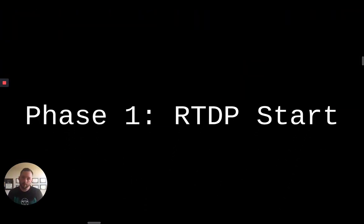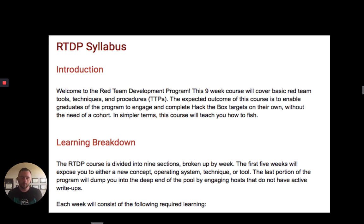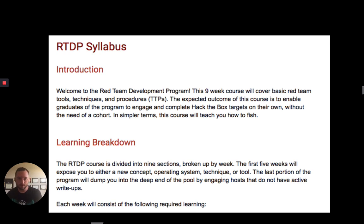Phase one: the Red Team Dev Program started. I had selected five people for our cohort, got buy-in from their managers to come in for four hours a week on Fridays, and the whole cohort met together. I made a syllabus broken into two parts: a learning phase for the first five weeks, then a live ops phase for the last four weeks. The first five weeks covered Windows, Linux, Windows PrivEsc, Linux PrivEsc, and password cracking. We would meet once a week to discuss and impart as much knowledge as we could so they could go out and research on their own.